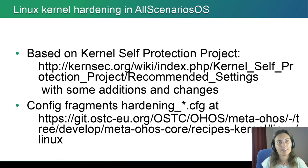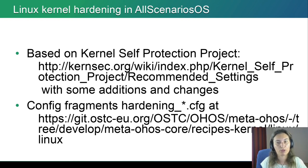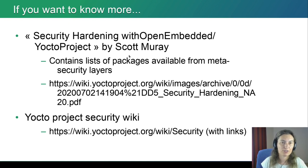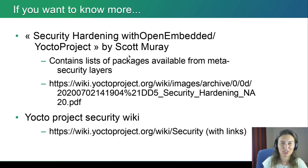On the Linux kernel side, we did kernel hardening using quite many kernel options from the kernel self-protect project — a very useful site where you can find recommended settings for the Linux kernel. We made some changes, additions, and modifications; certain options we did not find necessary for our use case, and we added some more. We've also added per-subject hardening fragments as hardening .cfg files in our repository, all available for you to take a look at, reuse, and adjust as you see fit. Currently I see no easy way to integrate that into mainline Yocto — would be interested to know if there is one.